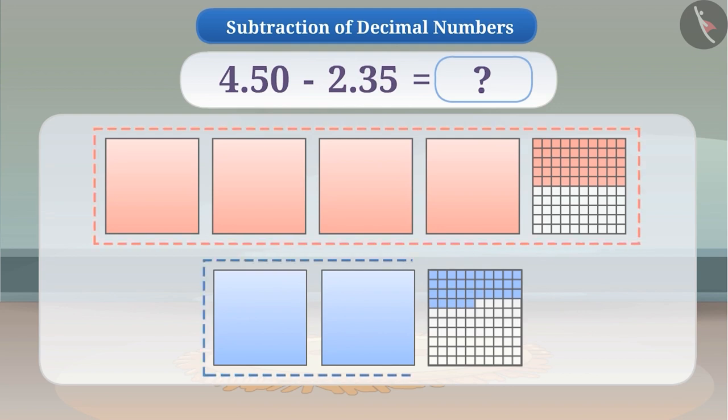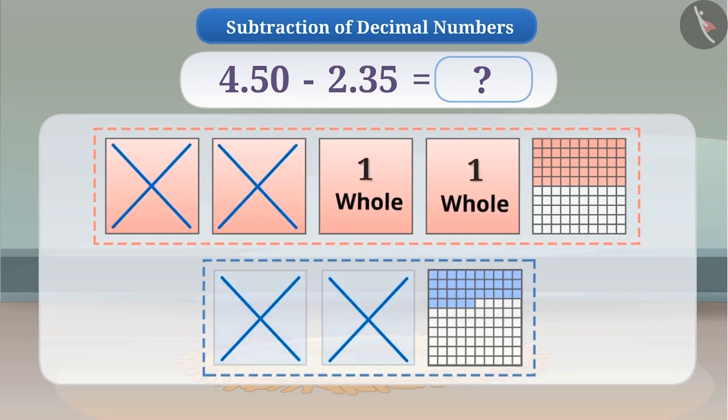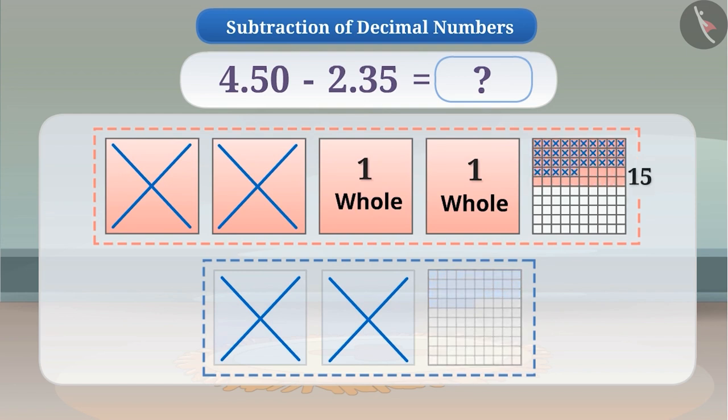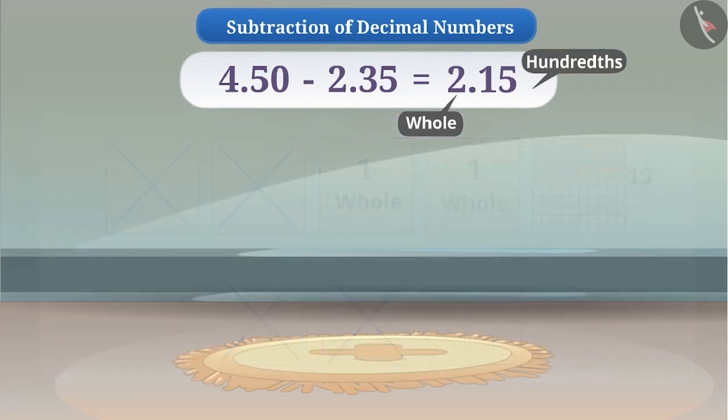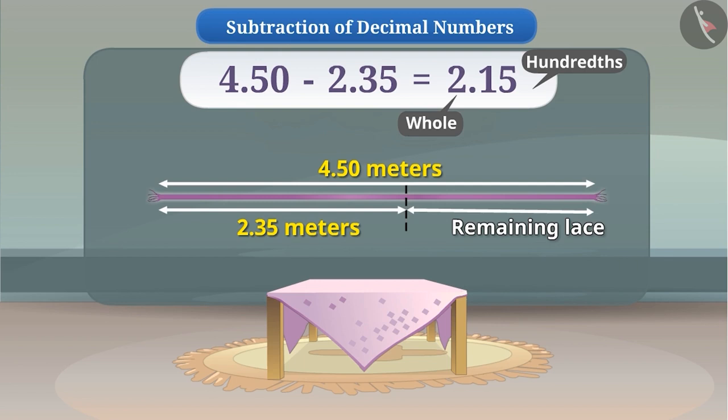Now, we will subtract 2.35 from 4.50. Since there are 4 squares here, after removing 2 squares, 2 squares will remain. Similarly, after removing 35 parts from 50 parts of the hundredths, 15 parts will remain. So how can we write 2 wholes and 15 parts in decimal form? Think for a while. You got it right. We will write it as 2.15. Since there are two wholes and 15 hundredths, therefore the length of the remaining lace is 2.15 metres.